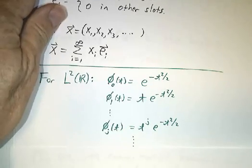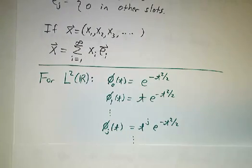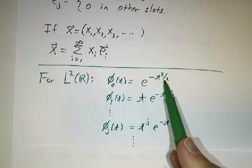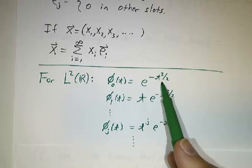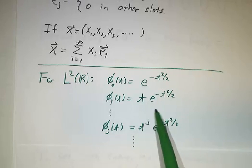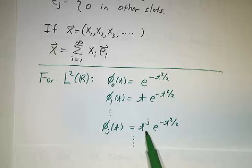And the second example is for L2 of R, if you take polynomials times e to the minus t2 over 2. So 1 times e to the minus t2 over 2, t times e to the minus t2 over 2, t squared times e to the minus t2 over 2, t to the j times e to the minus t2 over 2.